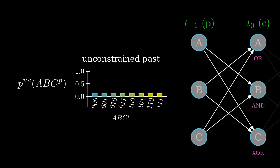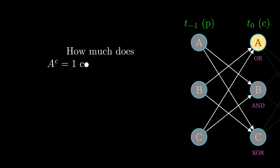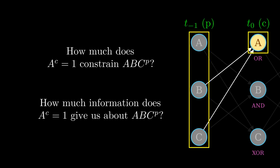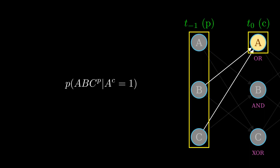But what if we suppose that current A is 1? How much does the state of A constrain the past state of the system? Or, another way of looking at it, how much information can A give us about the past state of the system? Strictly speaking, these two questions are not the same, but the technical distinction would be too much for us to discuss right now. So for the rest of this video, I will treat them as more or less equivalent. Now, by looking at the connections, we know that current A is affected by past B and C. So in this case, what would be the probability of a certain past state given that current A is 1? We can calculate this by applying Bayes' rule.